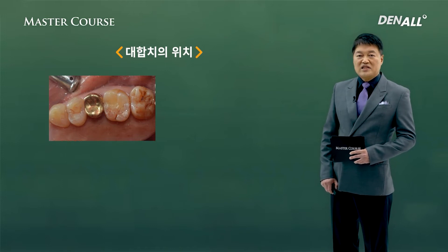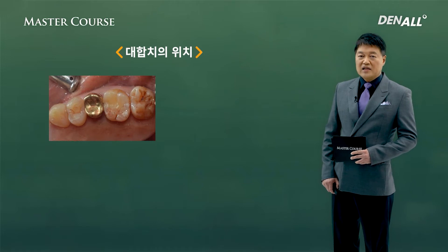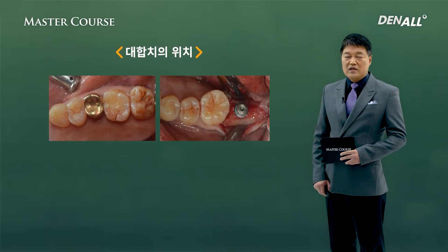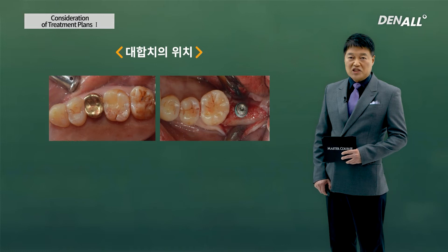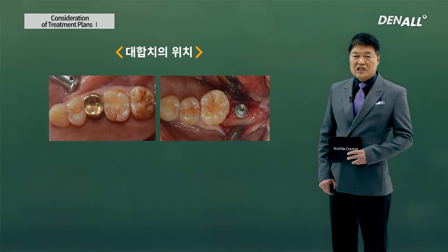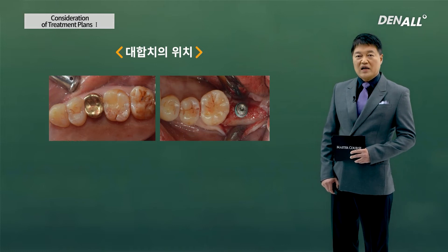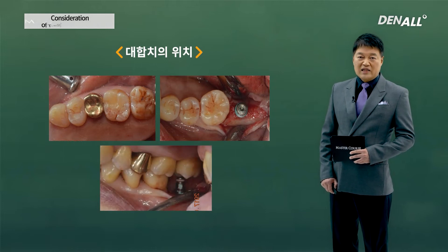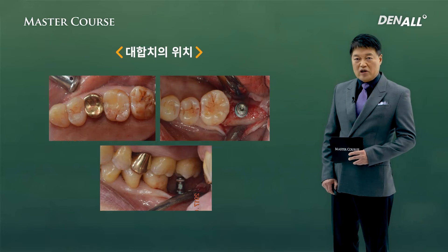For example, number 37 implant needs to be placed, but number 27 is slightly buccally inclined. In these cases, when we place the implant, the most important thing to consider is occlusion. If we can, considering this, we can place it a little bit buccally and then be able to provide prosthesis without difficulty and achieve optimum occlusion.